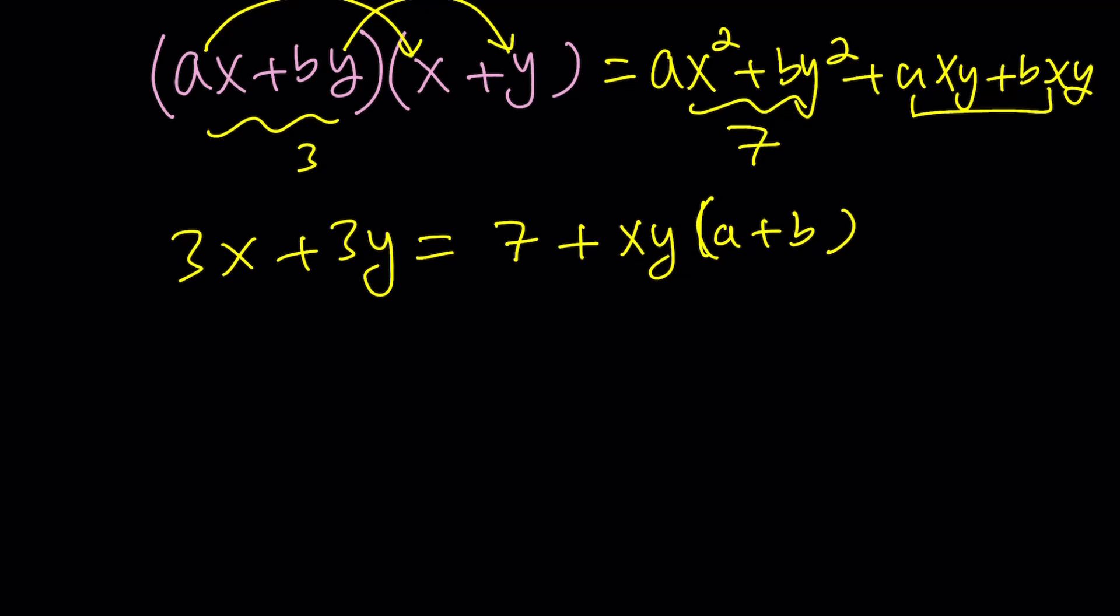So we can write this as 7 plus xy times a plus b. We do not know what a plus b is at this point, or neither do we know xy or 3x plus 3y. We're going to leave it at that, because this equation is going to come in handy later. So let's go ahead and save it.